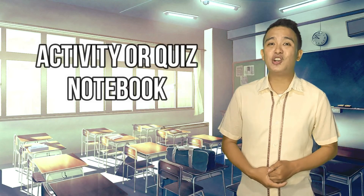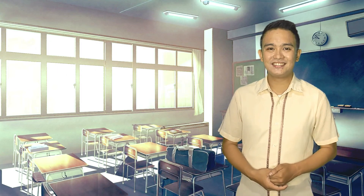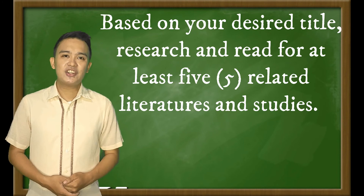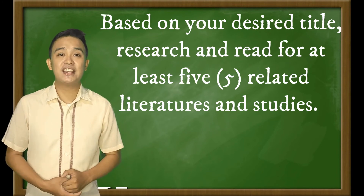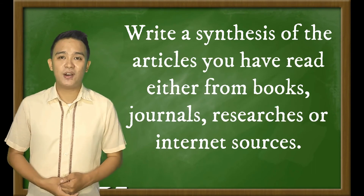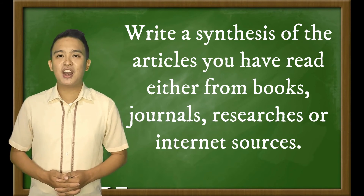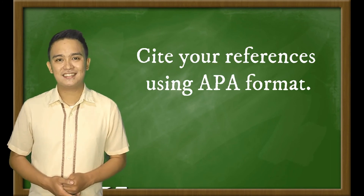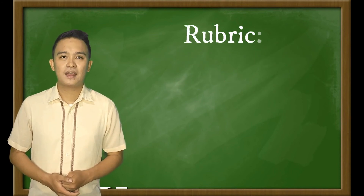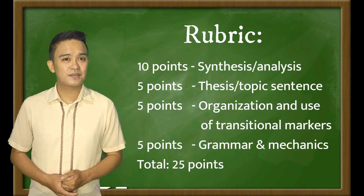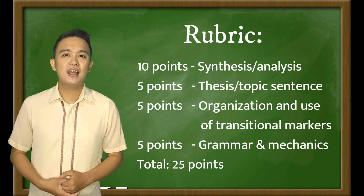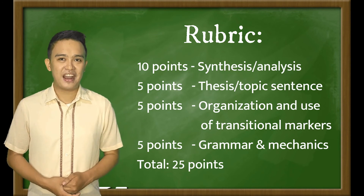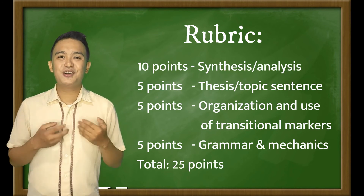I guess you are now ready for your activity. Write your answers in your activity or quiz notebook. Based on your desired title, research and read at least five related literatures and studies. Then write a synthesis of the articles you have read either from books, journals, researches, or internet sources. Also, don't forget to cite your references using APA format. The rubric is: 10 points for synthesis or analysis, 5 points for thesis or topic sentence, 5 for organization and use of transitional markers, and 5 for grammar and mechanics — a total of 25 points.